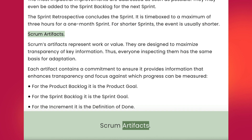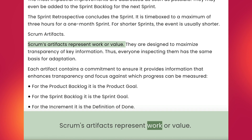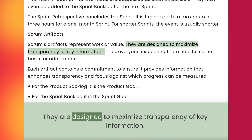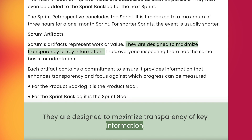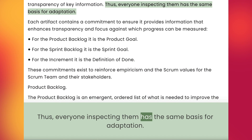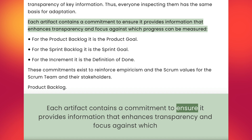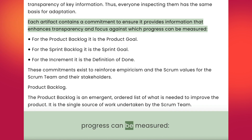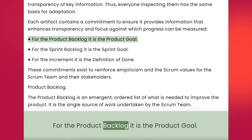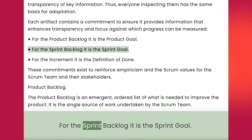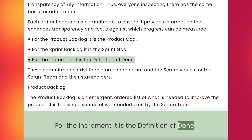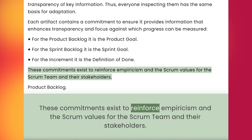Scrum Artifacts. Scrum's artifacts represent work or value. They are designed to maximize transparency of key information so that everyone inspecting them has the same basis for adaptation. Each artifact contains a commitment to ensure it provides information that enhances transparency and focus against which progress can be measured. For the product backlog, it is the product goal. For the sprint backlog, it is the sprint goal. For the increment, it is the definition of done. These commitments exist to reinforce empiricism and the Scrum values for the Scrum team and their stakeholders.